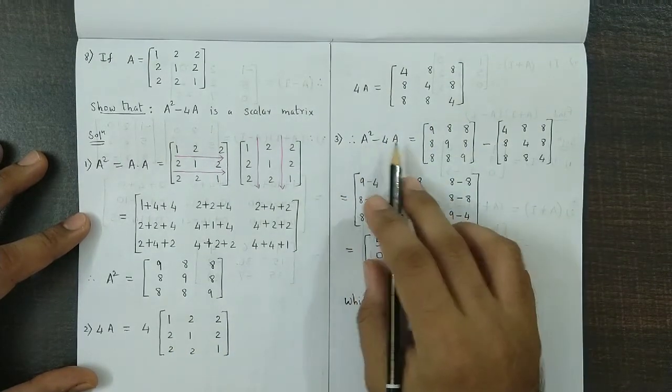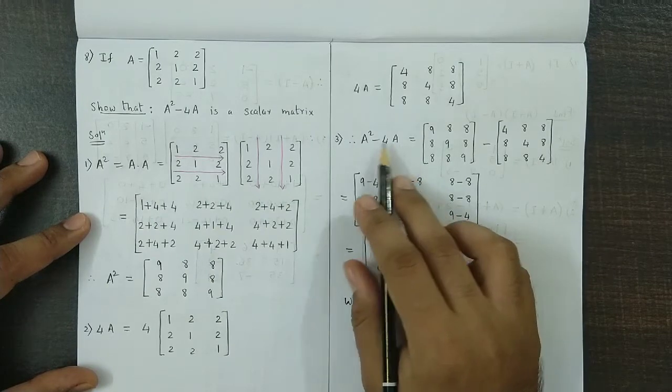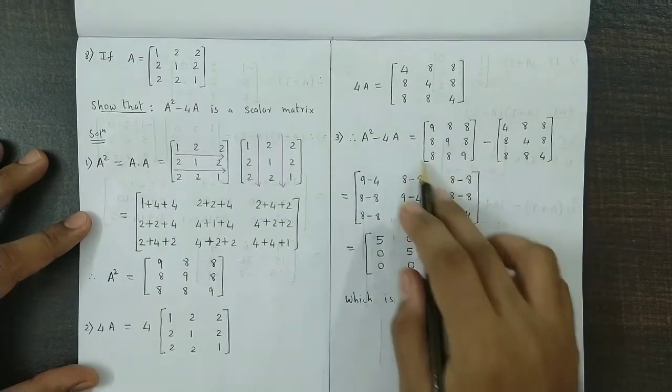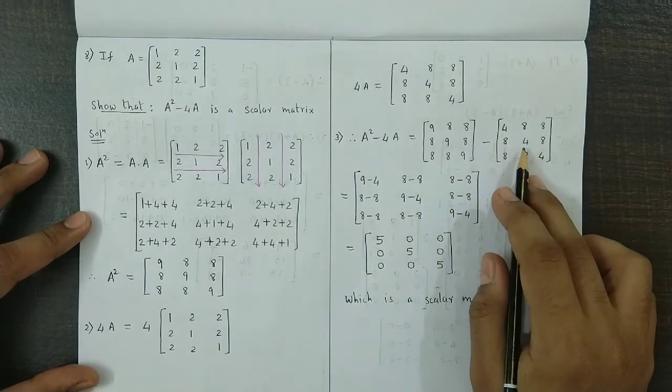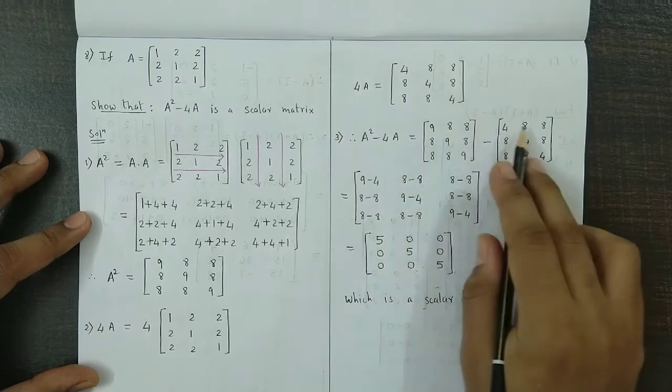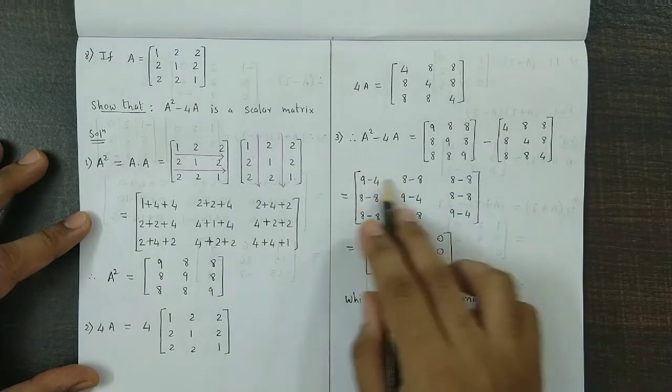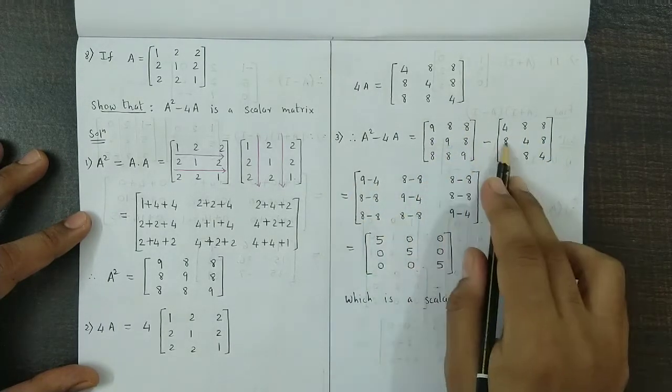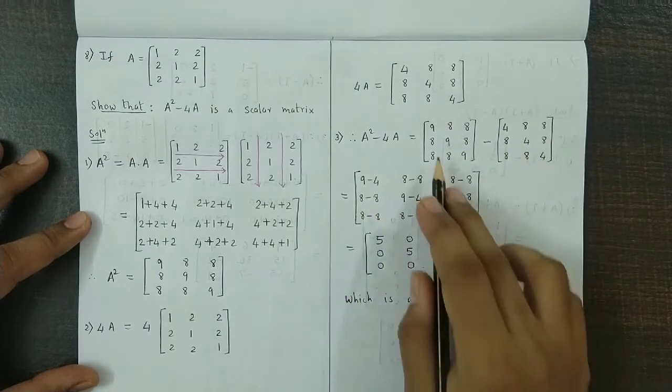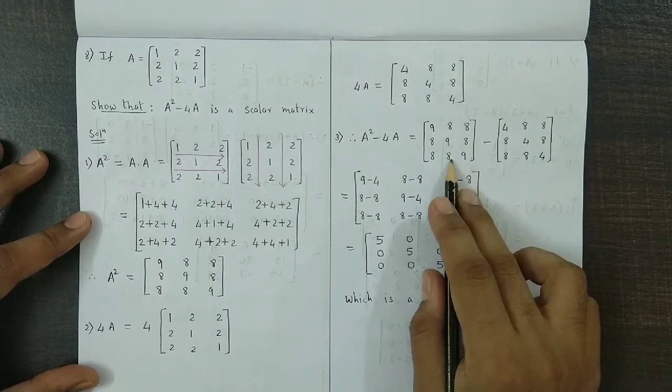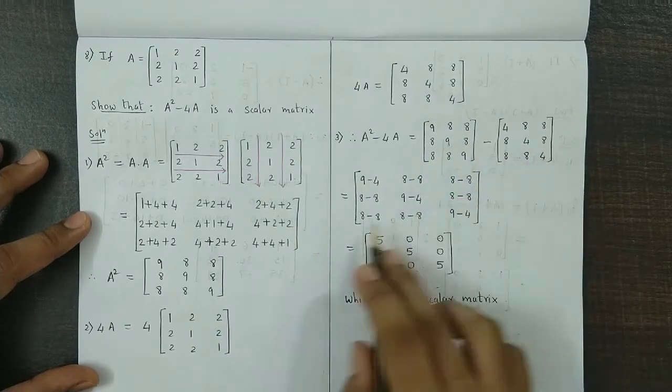So we have obtained A square and we have obtained 4A. Now we subtract the two matrices. This is matrix A square, this is matrix 4A. Now we subtract the corresponding elements. So 9 minus 4, 8 minus 8, 8 minus 8, that is the first row. 8 minus 8, 9 minus 4, 8 minus 8, that is the second row. Then 8 minus 8, 8 minus 8, and 9 minus 4.